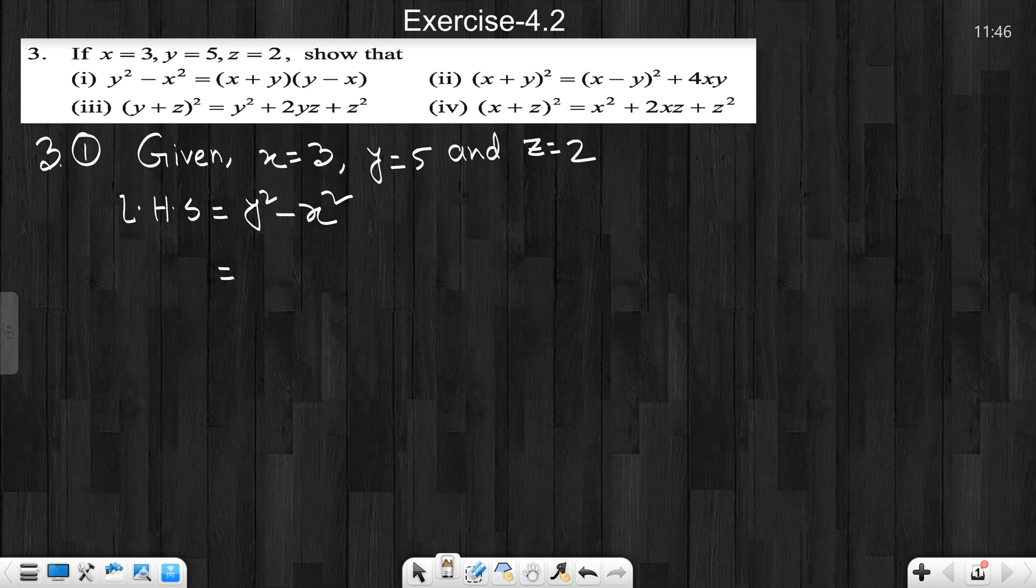Now, y value is 5. So we write 5. Minus x, x value is 3. We write 3 as square. So, 5 square, 5 square means 5 multiply 5. Minus 3 square, 3 square means 3 multiply 3. We have to write the value of x and y.